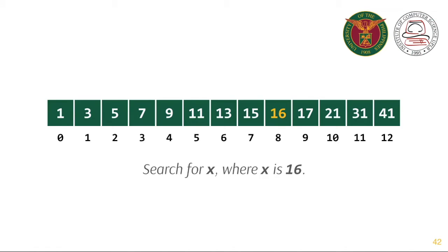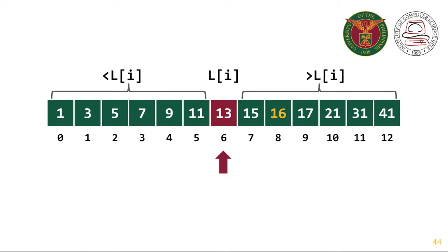Here, we are going to search for x where x is 16 using binary search. The first step is to divide the list in half. If the value at the middle is 13, since 13 is not equal to 16, we will decide whether we go to the right or to the left of 13.